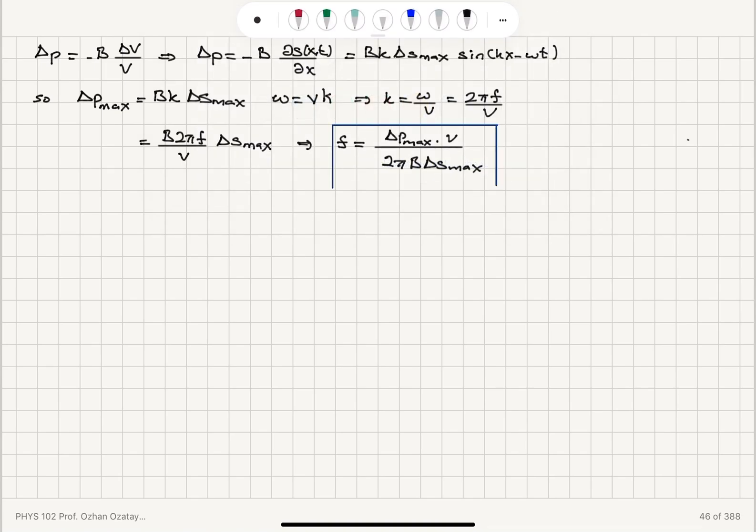So the speed of sound in air is roughly 343 meters per second in air. This is at 20 degrees Celsius.